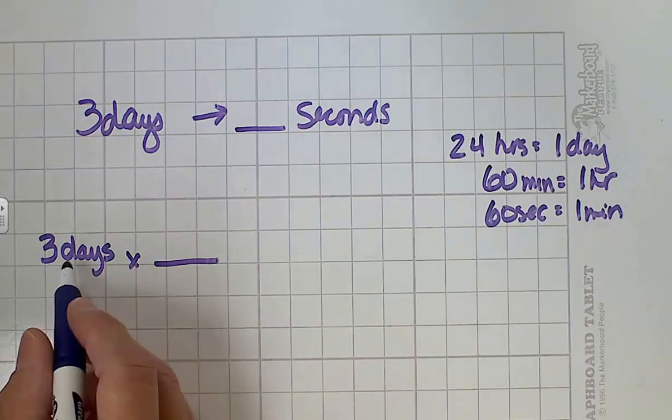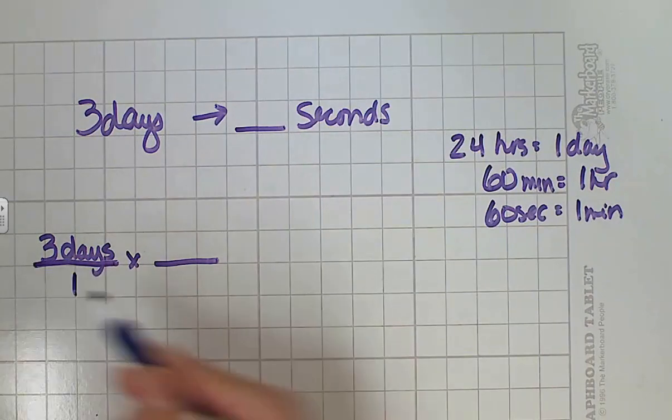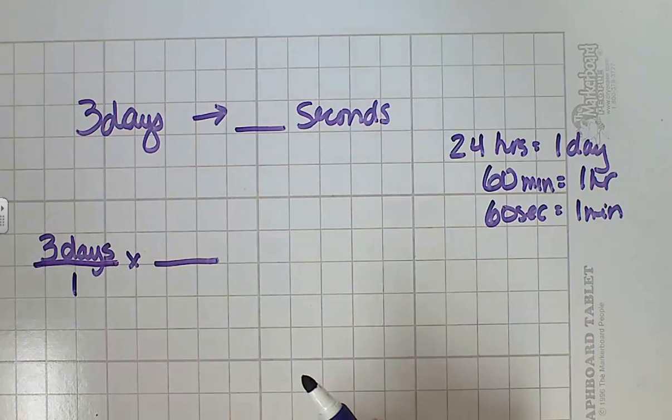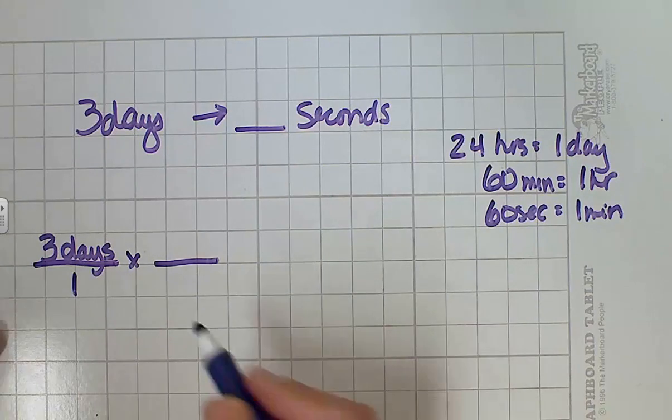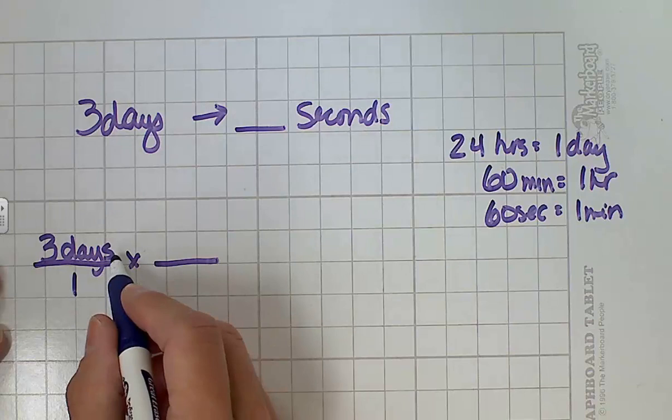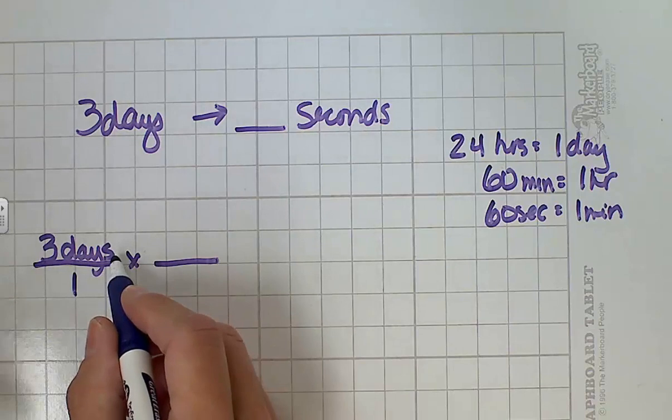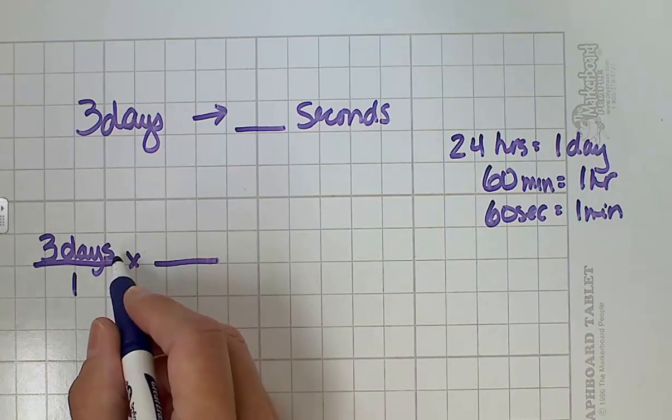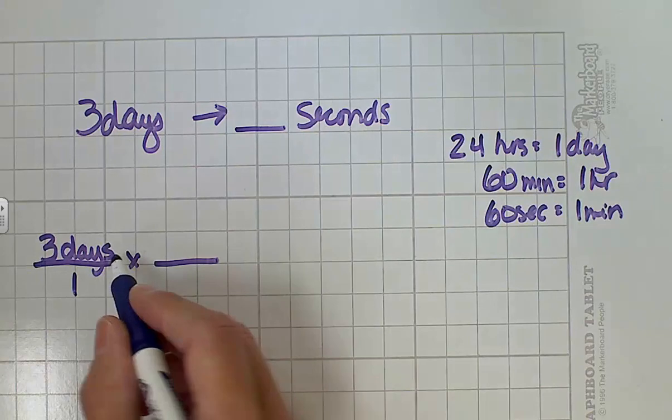Now here's the tricky part. You see this three days? It's really over an invisible one. We don't show it but it's there. Sometimes it helps to write that, so if you need help go ahead and write that. It's not a big deal. So I'm looking at days and I see that it's in the numerator. The numerator is the top part of the fraction. The denominator is the bottom part. So it's in the numerator.